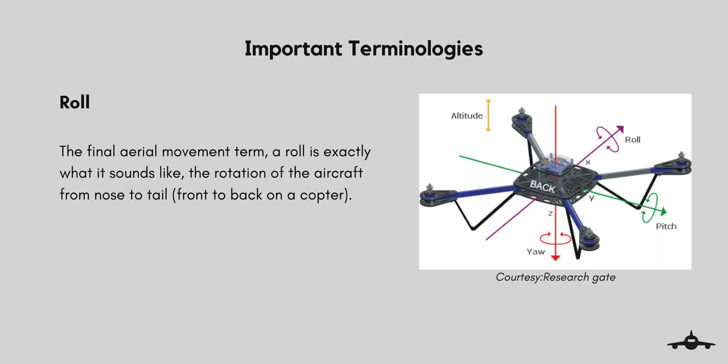Roll is the final aerial movement term and is exactly what it sounds like — the rotation of the aircraft from nose to tail, that is, front to back on a copter. Basically, roll refers to the movement of the drone forward, backward, left, and right along a horizontal axis.